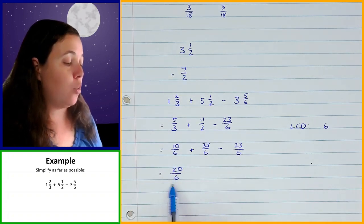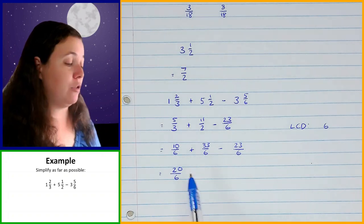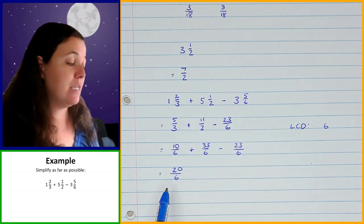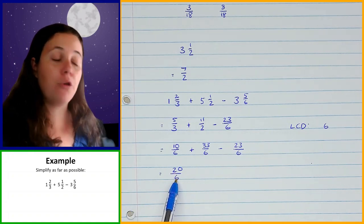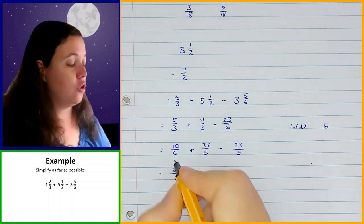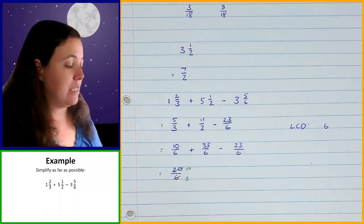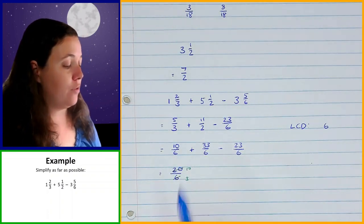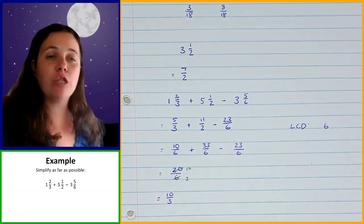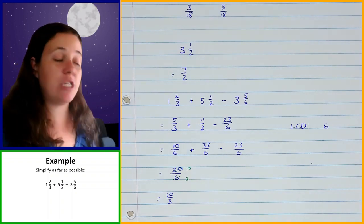So now once I've got to this, remember the instruction was to simplify as far as possible. If you look at that fraction, I can still simplify that by dividing the numerator and the denominator both by 2. I can say 2 goes in there 10 times, 2 goes in there 3 times, and that leaves me with 10 over 3. Now 10 over 3 can't be simplified any further, which means I am now finished with that question.